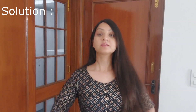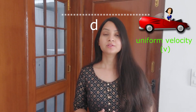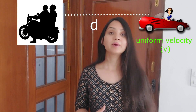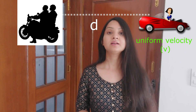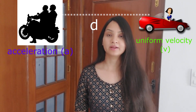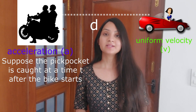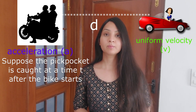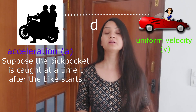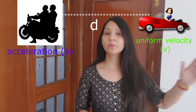Let's move to the solution. We have three known quantities: the uniform velocity v of Kajal's jeep, the initial distance d between the jeep and the bike, and the acceleration a of the bike. We assume that after some time t, Kajal is able to catch the pickpocket — we do not know this time, so we assume it to be t.